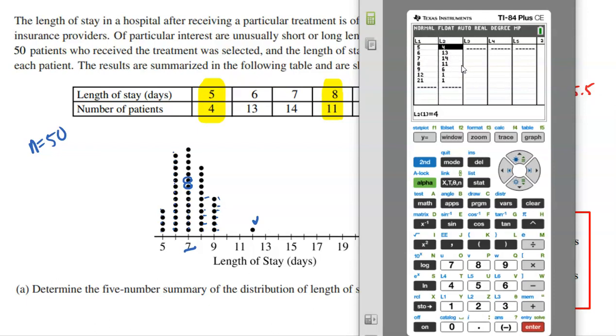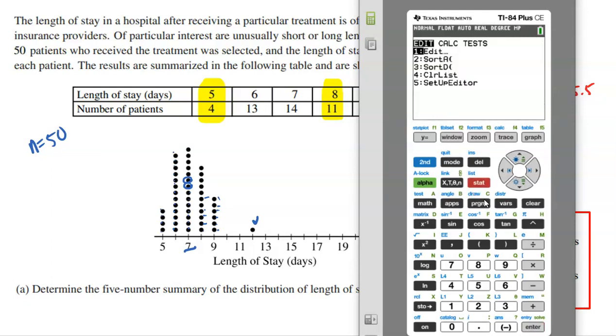Once you have all that entered into your calculator, you're going to hit stat, slide over to calculate and select number one. But we have to tell the calculator to use list one as our list of values, and the frequency list is how many times each of those values actually occurred, and that's list two. Then we're going to calculate and we get the mean, standard deviation, but more importantly, scroll down, you get the five number summary. The min is five, the max is 21, Q1 is six, median is seven, Q3 is eight.